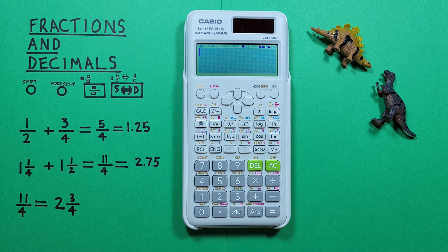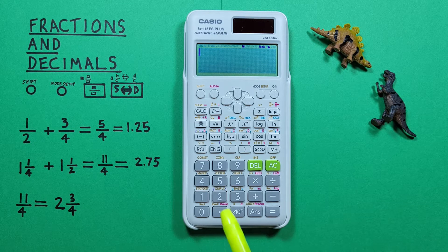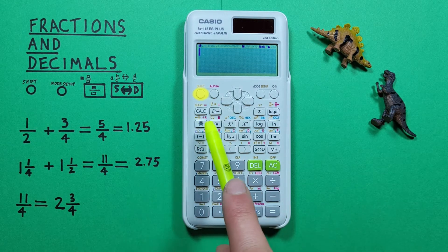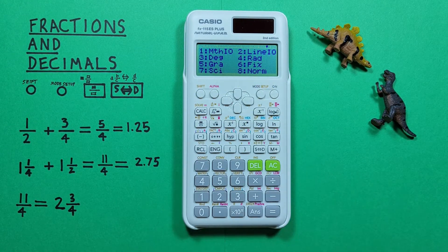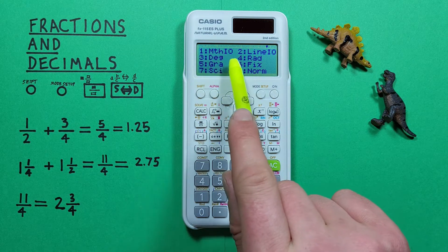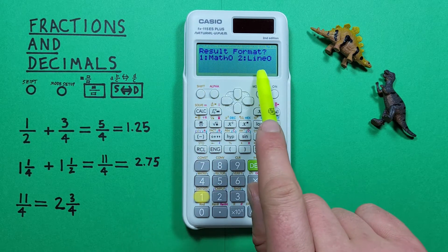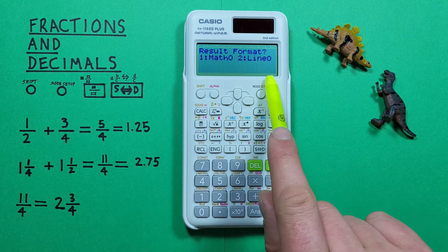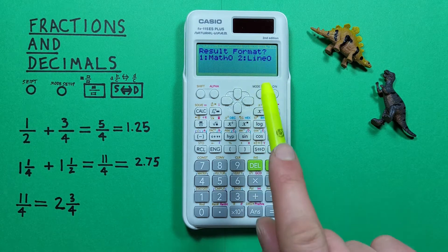But if we always want to get decimals, that can get a little annoying. If this is the case, what we can do is press shift and then the mode key to bring up this menu here. And then we can press the 1 for math IO to bring us to this menu here and it'll ask us to pick a format.